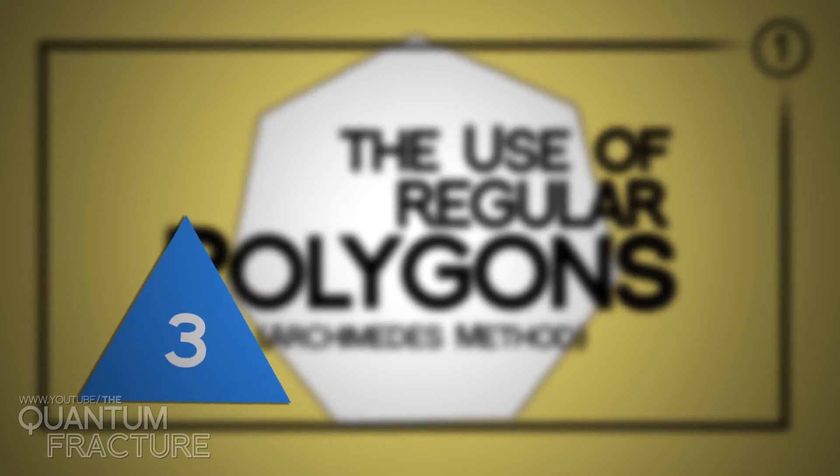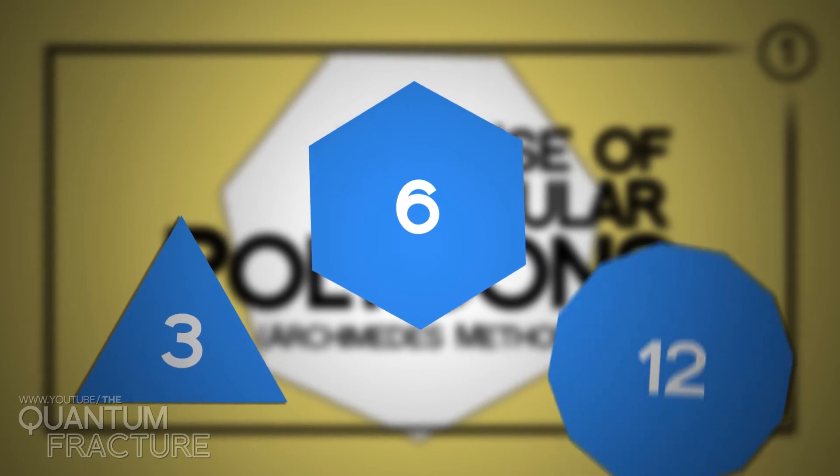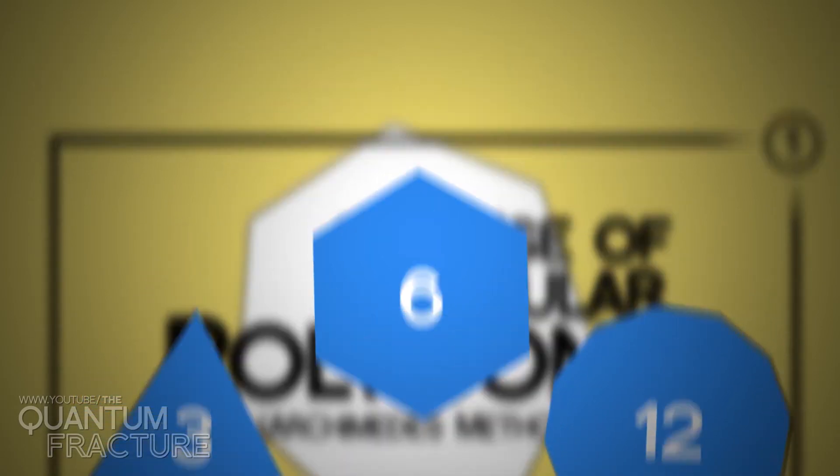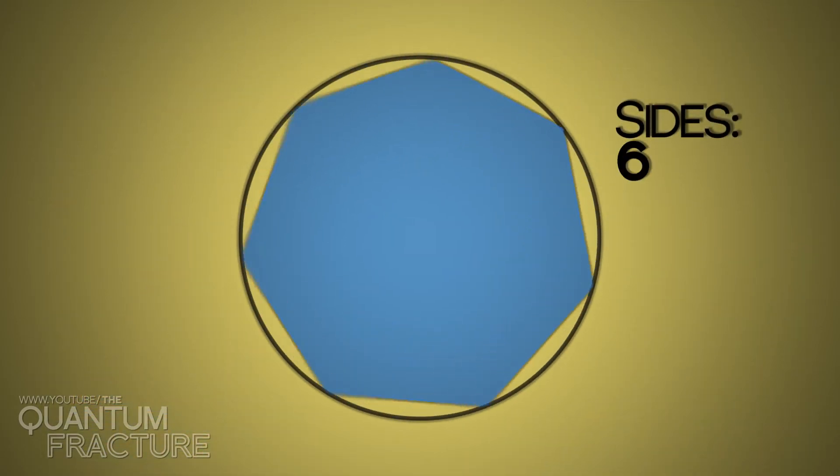For example, this triangle is a three-sided polygon. A hexagon has got six sides, and a dodecagon has got 12. I'm sure that you've noticed that the more sides a polygon has, the more it looks like a circumference. Let's exploit this.